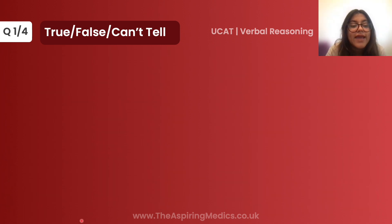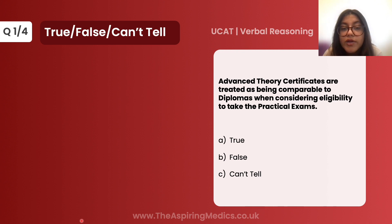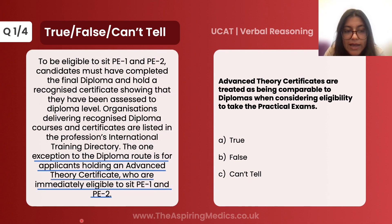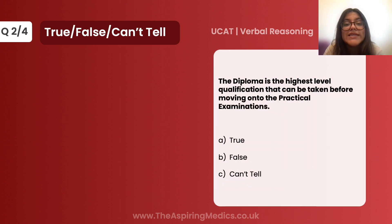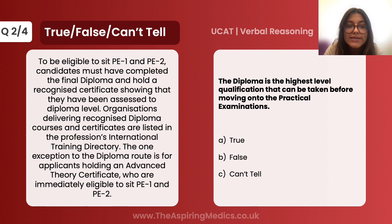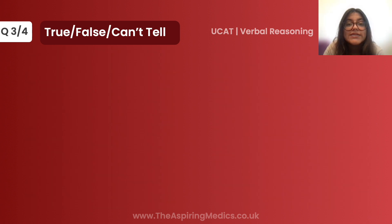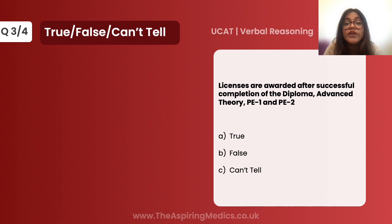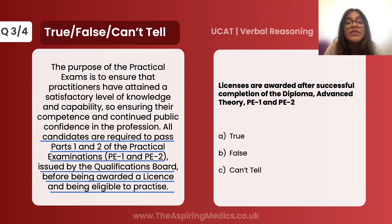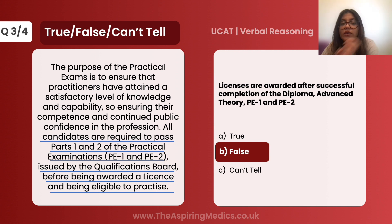Let's look at the questions. Question 1: advanced theory certificates are treated as being comparable to diplomas when considering eligibility to take the practical exams. If you have an advanced theory certificate, you are immediately eligible to sit PE1 and PE2 — so this statement is true. Question 2: the diploma is the highest level qualification that can be taken before moving on to the practical exams. The passage only mentions needing a diploma to sit PE1 and PE2, with no mention of what the highest level qualification is — so we can't tell. Question 3: licenses are awarded after successful completion of the diploma, advanced theory, PE1 and PE2. This is false — you need either the diploma OR advanced theory, then PE1 and PE2, not all of them.